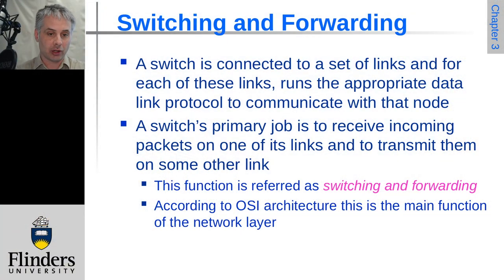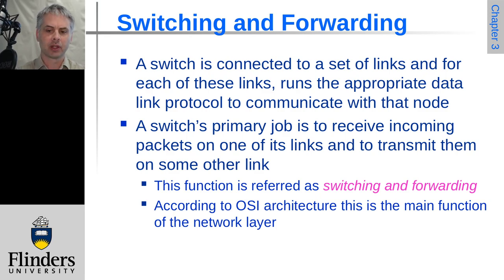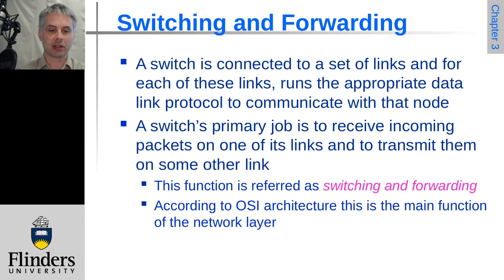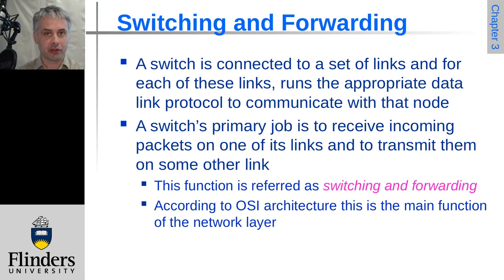Back to looking at switching. A switch is connected by some set of links. If you think about your standard rack mount switch, you've got a bunch of twisted pair ports in the front for ethernet, and on each of those ports it's separately running the relevant data link protocol — in this case fast ethernet or gigabit ethernet typically. The job of the switch is to receive frames coming in on any of those ports and work out where they need to get transmitted to, then transmit them.